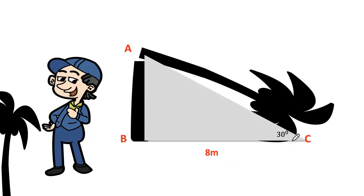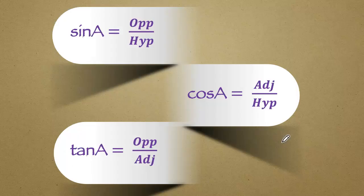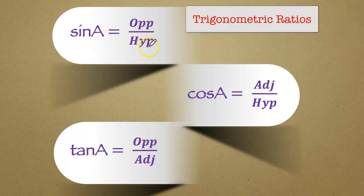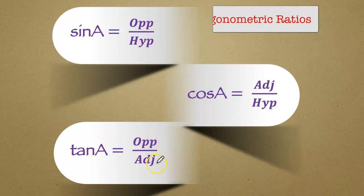Here we need the help of trigonometric ratios. Sine A is opposite side by hypotenuse. Cos A is adjacent side by hypotenuse. Tan A is opposite side by adjacent.